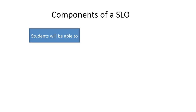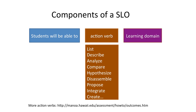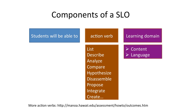There are three components of an SLO. It almost always starts with the phrase 'students will be able to' or 'students can,' followed by an action verb or action verbs such as list, describe, or analyze. You can find more verbs through the link I provide in 'more to consider.' The third component is a learning domain, or learning domains, which can be classified into content domain and language domain in PBLL.